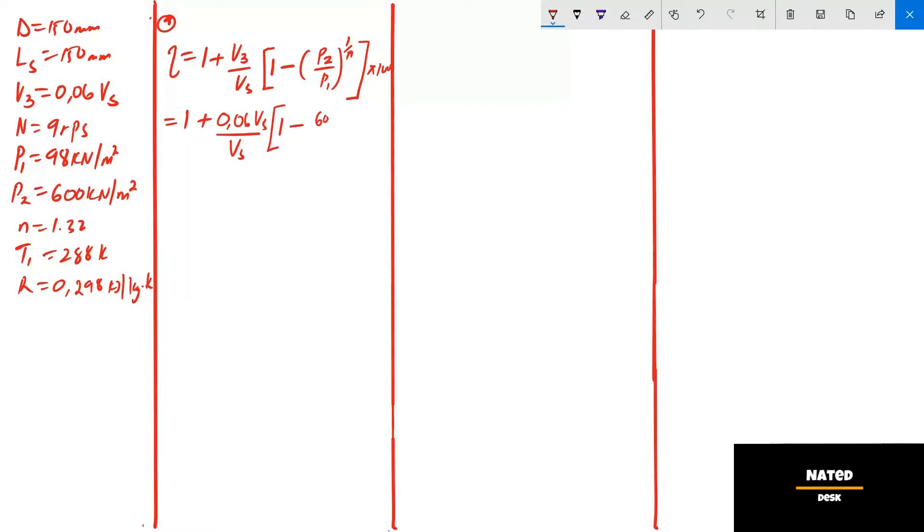600 divide by 98, close bracket, to the exponent 1 over index N, close square bracket, multiply by 100. Vs and Vs cancel, and no more unknown values. Therefore efficiency equals 82.3%.